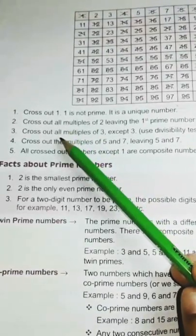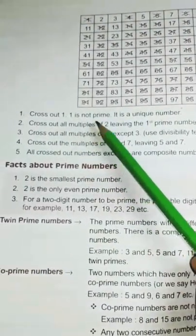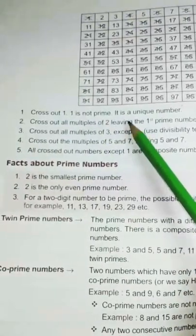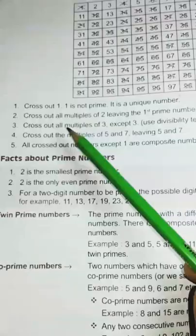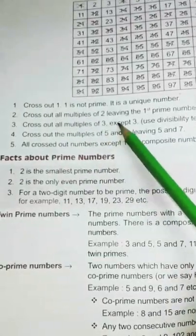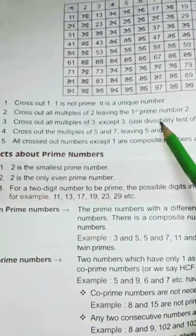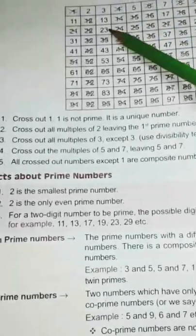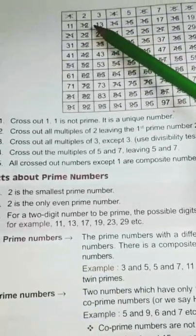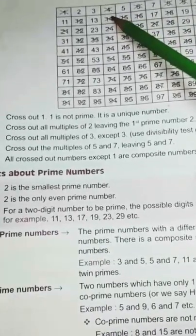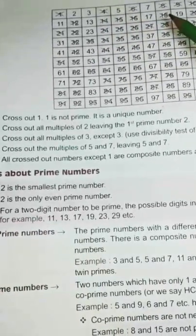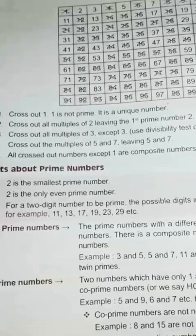Cross out 1. 1 is not a prime number. It is a unique number. Then, cross out all multiples of 2, leaving the first prime number 2. Here you cross out first one. Then, except 2, other multiples of 2, you can cross out. That is 4, 6, then 8. Like this.